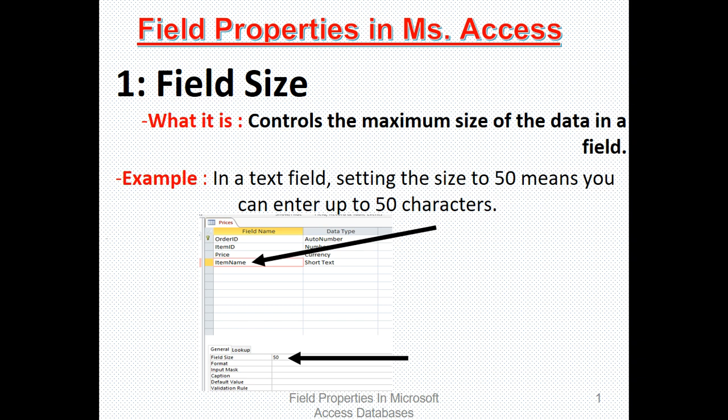We have various types of field properties: field size, format, input mask, caption, default values, etc. You can see them at this point here.